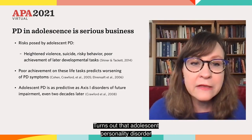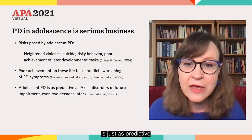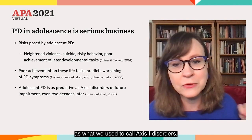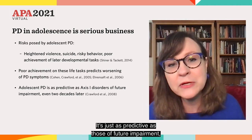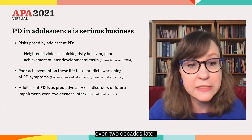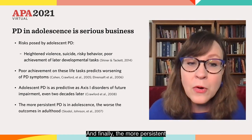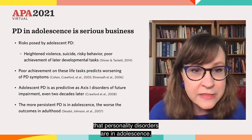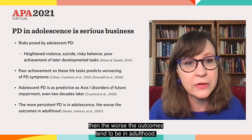It turns out that adolescent personality disorder is just as predictive as what we used to call Axis I disorders — depression, anxiety, and so on — of future impairment, even two decades later. And finally, the more persistent that personality disorders are in adolescence, then the worse the outcomes tend to be in adulthood.